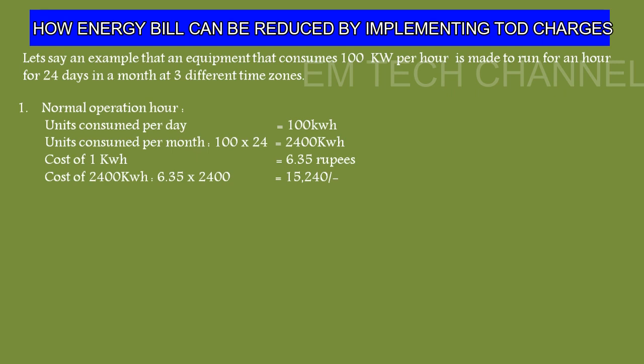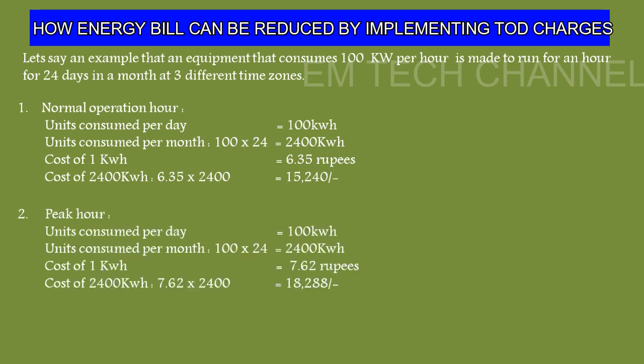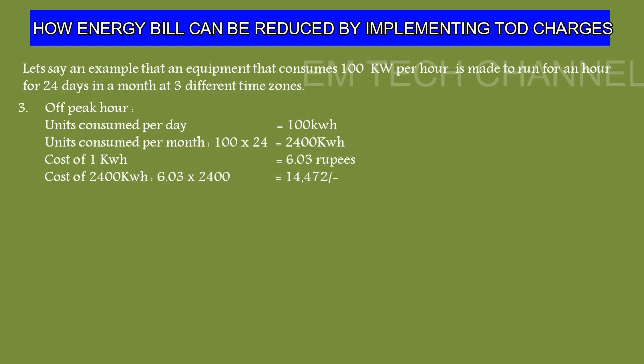For normal operation hour: units consumed per day is 100 kilowatt hours, and per month is 100 × 24 = 2,400 kilowatt hours. At 6.35 rupees per unit, the monthly cost comes to ₹15,240. For peak hour: same 2,400 units, but at 7.62 rupees per unit, the cost comes to ₹18,288. For off-peak hour: same 2,400 units at 6.03 rupees per unit — with the government's 5 percent discount on normal charges — the cost comes to ₹14,472.